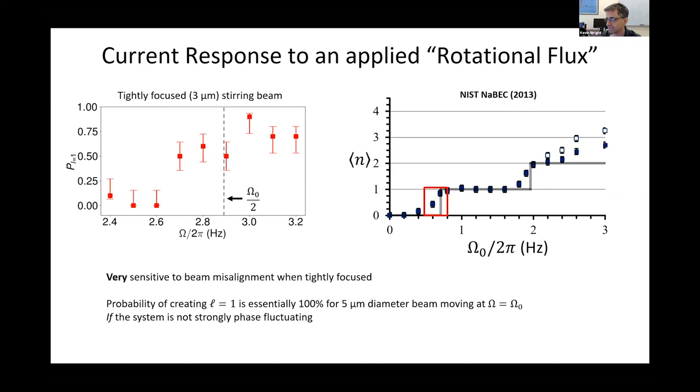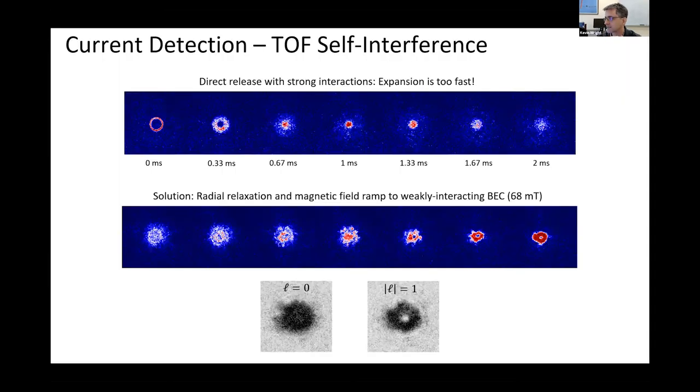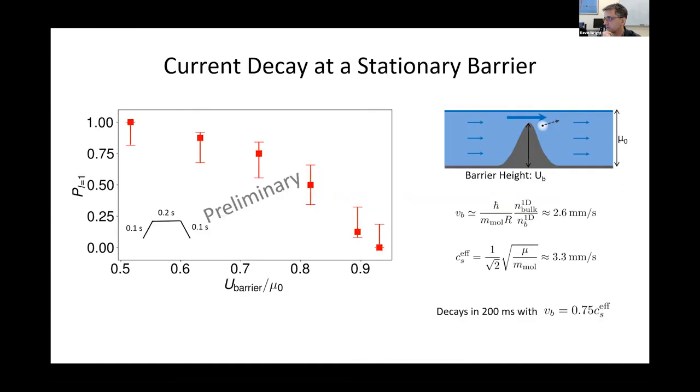I'll keep the current detection short. If you just release the atoms directly into time of flight, the Fermi energy is high. These things pretty well explode. The Fermi wavelength is much smaller than the resolution limit. You can't see anything even if there is some coherent feature going on like a vortex core. So we have to ramp into the weakly interacting BCS limit and actually relax the trap in order to be able to see the signature of a current in time of flight, which shows up as a vortex. Let's get to the more interesting stuff.